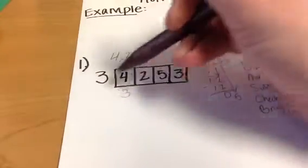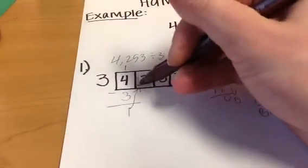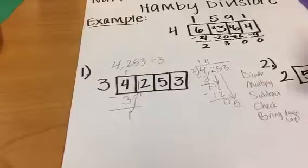It was 3. Multiply. 3 times 1 is 3. Subtraction step, 4 minus 3 is 1. So in this case, we're just going to bring the 1 in front of the 2.